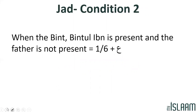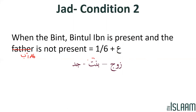Moving to condition number 2. Ideally I should use 'Ab' rather than 'father' — I'll correct that now inshallah. Condition number 2: when the Bint or Bint al-Ibn is present and the Ab is not present. Example: Zawj, Bint, Jad. The Bint is present, the Ab is not present, so the Jad will receive one-sixth plus Asaba. In another example with Zawj, Ibn, Bint, and Jad: since both the Ibn and Bint are present, we give preference to the Ibn under condition number 1, and the Jad only receives one-sixth.